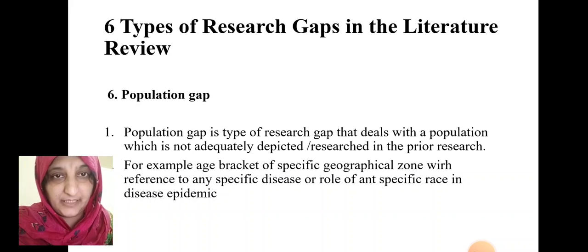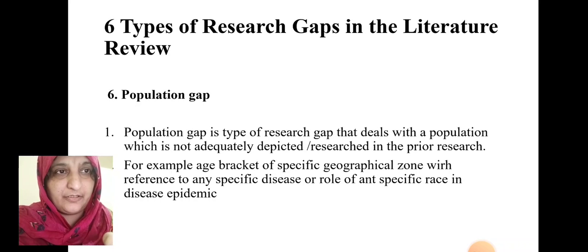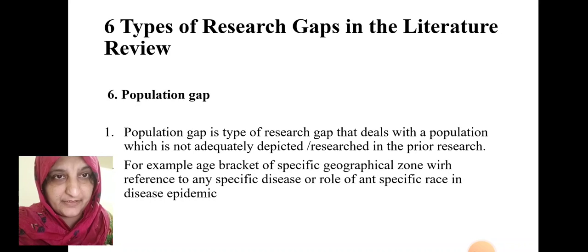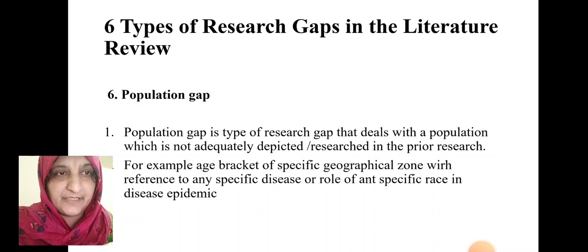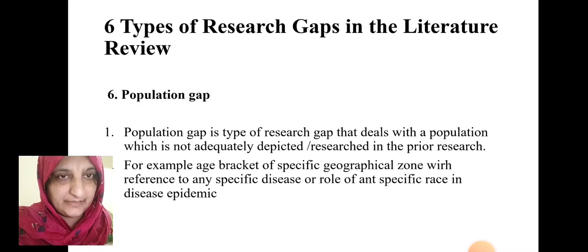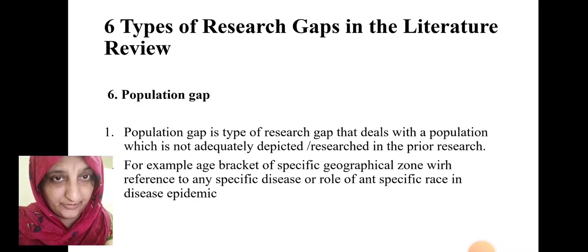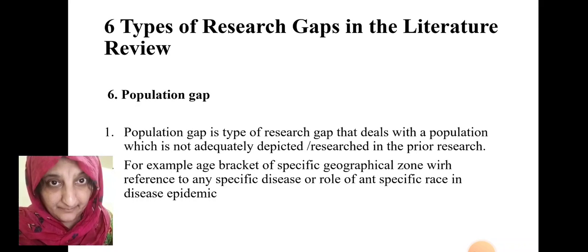Population gap is the type of research gap that deals with a population which is not adequately depicted or researched properly in any prior research studies. For example, if we discuss the age bracket of a specific geographical location and consider any specific disease or the role of any race in a disease epidemic, we are discussing the population gap in a specific geographical zone, or the population gap of a specific disease which might be epidemic or endemic.